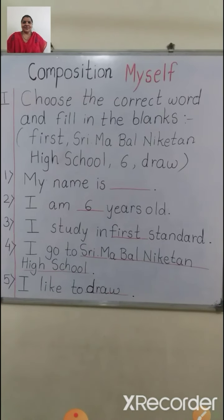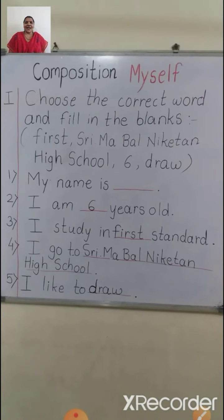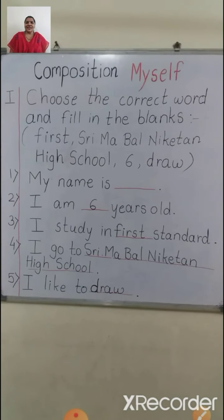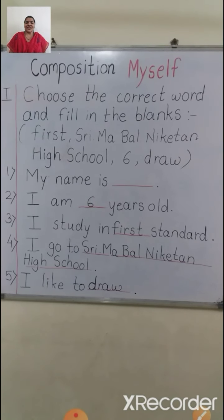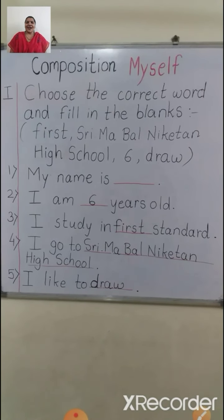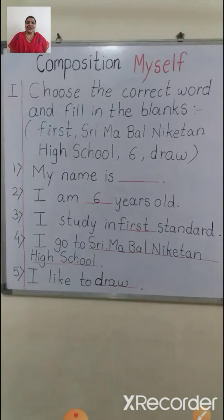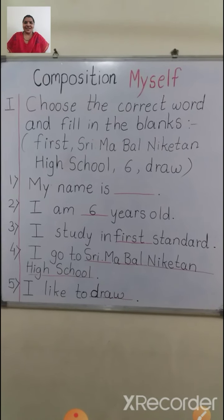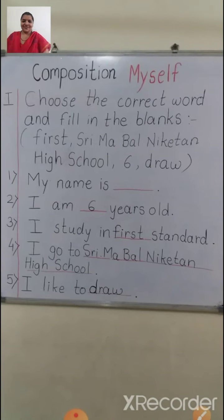Now we will read once. Composition: Myself. Roman I — Choose the correct word and fill in the blanks. The options are: First, Shreemabalniketan High School, Six, Draw. Number 1: My name is ___. I hope you all must have written your own name here. Number 2: I am six years old. Number 3: I study in First Standard. Number 4: I go to Shreemabalniketan High School. Number 5: I like to Draw. I hope children you all must have understood and written very neatly and nicely. Thank you so much.